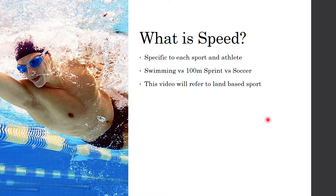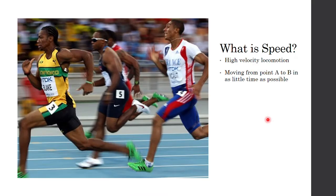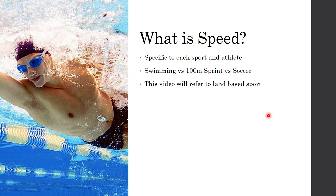If we look at the definition we posed for speed — moving from point A to B in as little time as possible — then a swimmer requires speed, a cyclist requires speed, but they need to do that in different means of locomotion compared to a sprinter. A swimmer needs to be fast in the water, a cyclist needs to be fast on their bike, a hundred meter sprinter needs to be fast from the start in one straight line for a hundred meters. And if we look at something like a team sport athlete, like a soccer player, they might need to perform three or four short bursts of speed for only maybe 10 to 20 meters and in different directions. So these are all different speeds depending on the athlete and the sport.